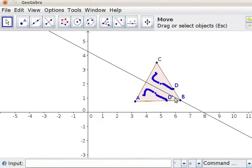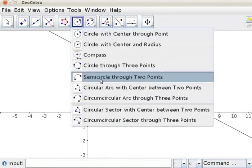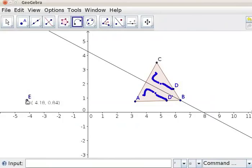Let us reflect a semicircle about a line. Let us draw a semicircle. Click on Semicircle through two points tool. Mark point E and then F. Click on Segment between two points. Mark point G and H. A line is drawn.